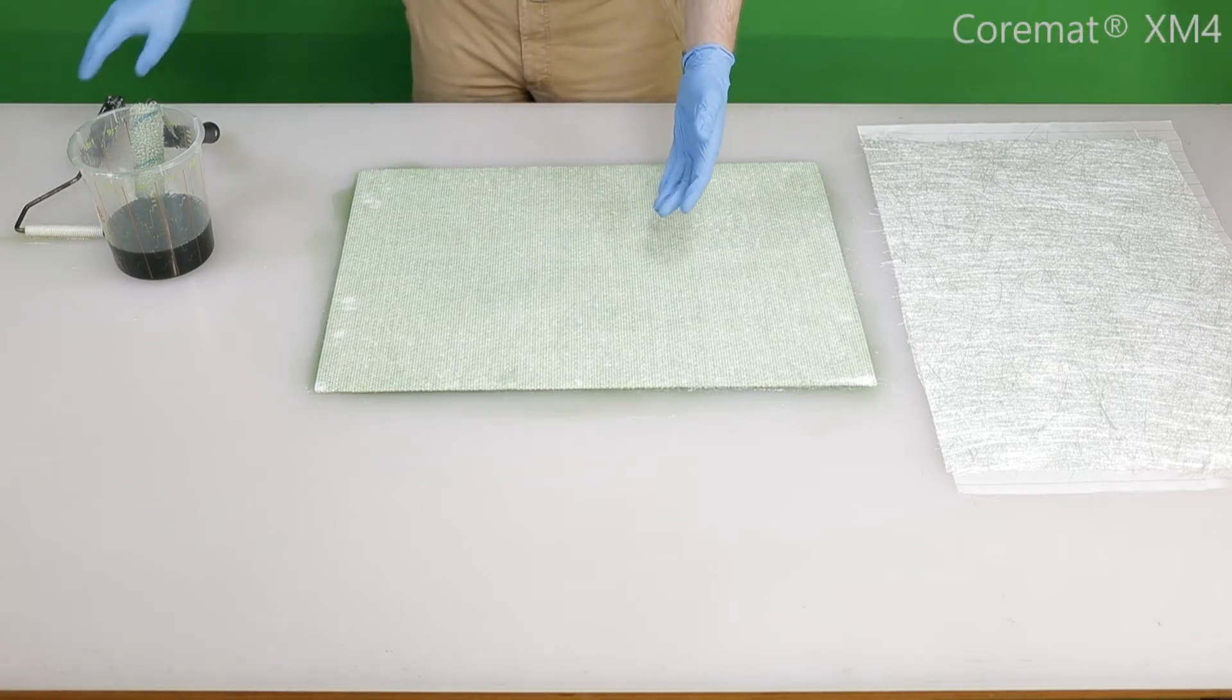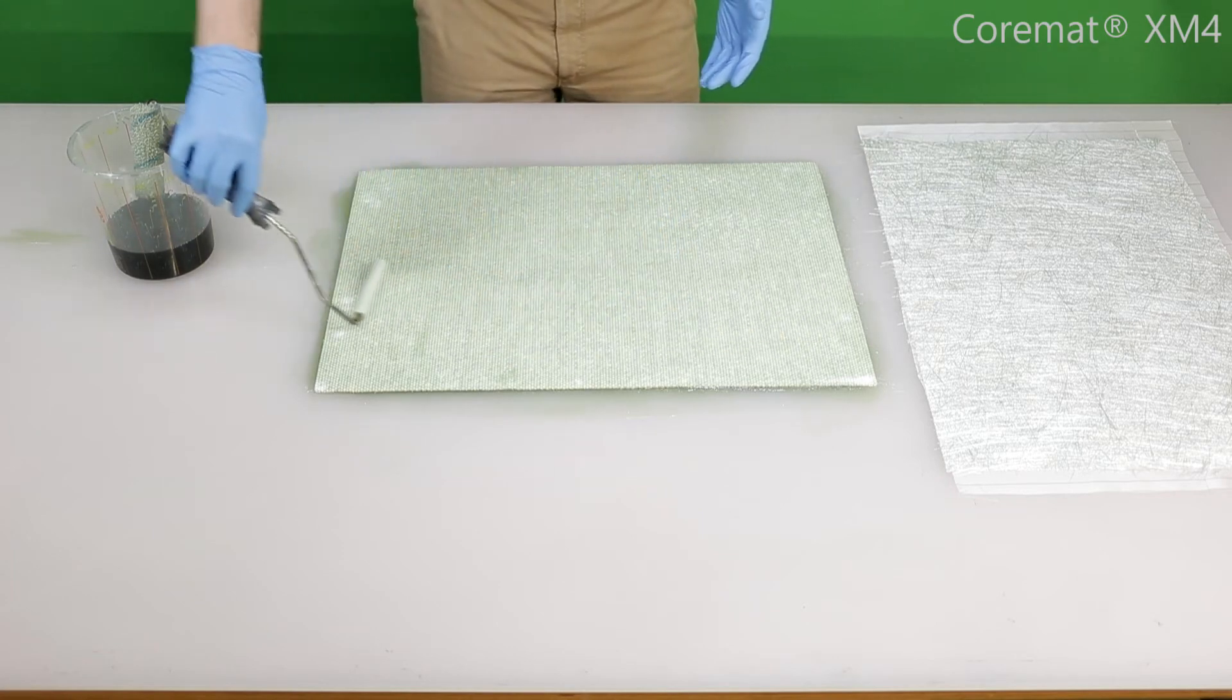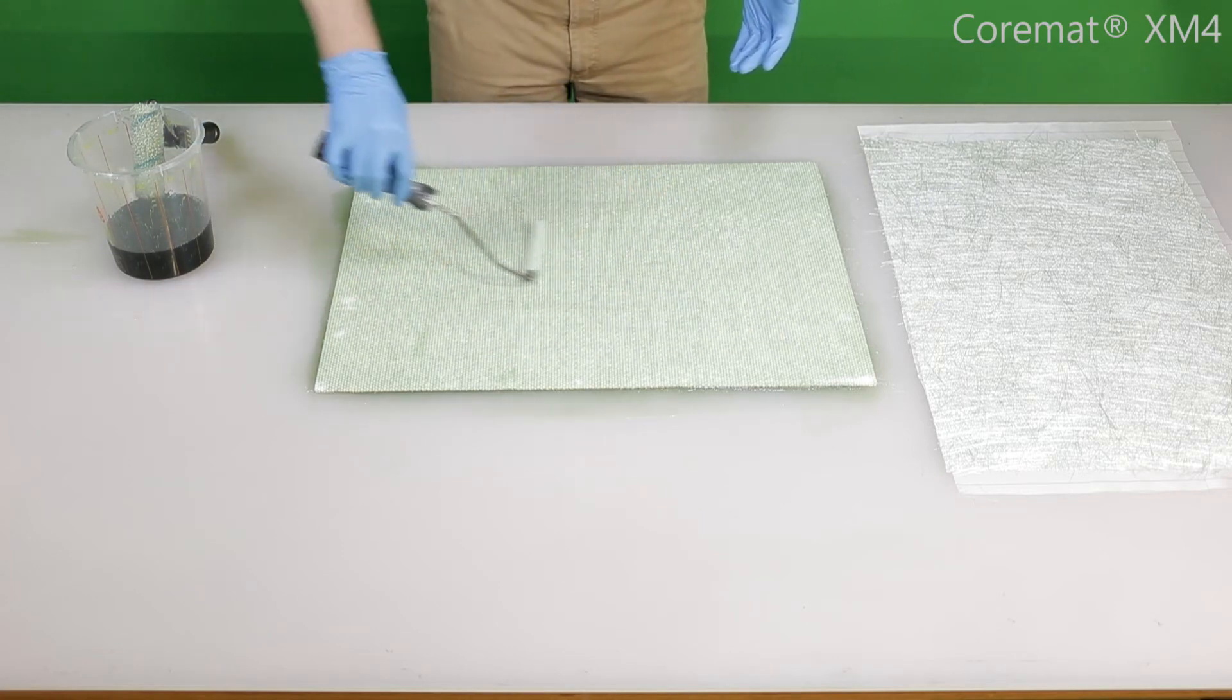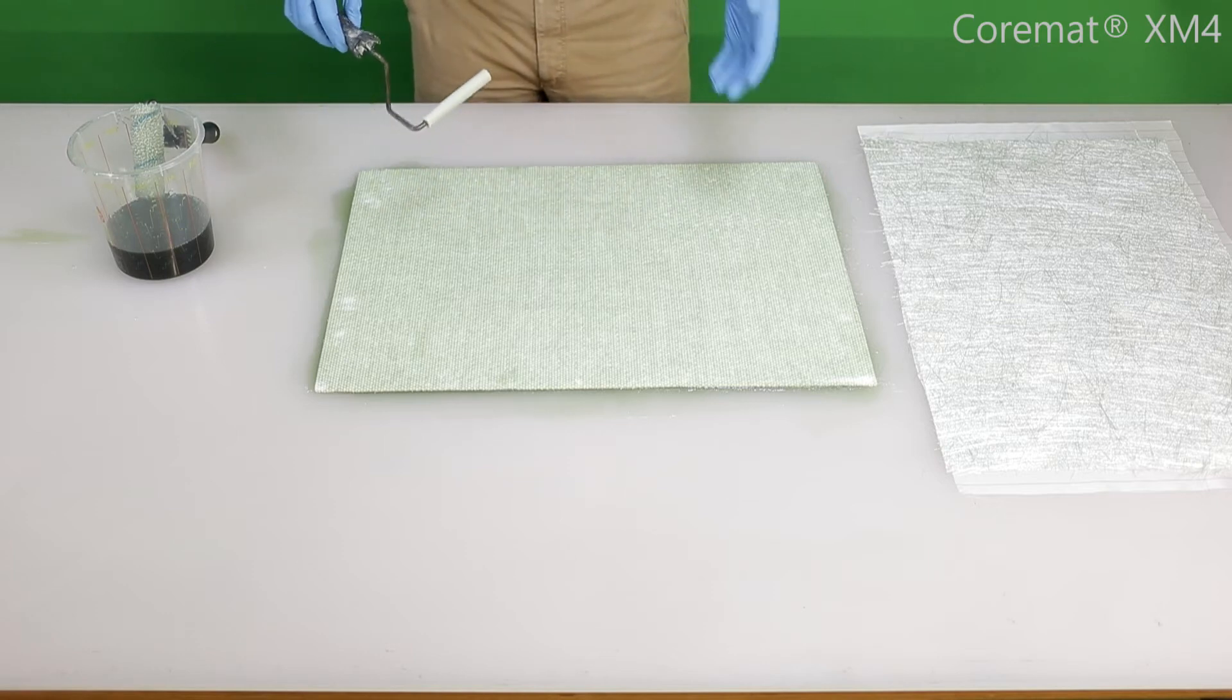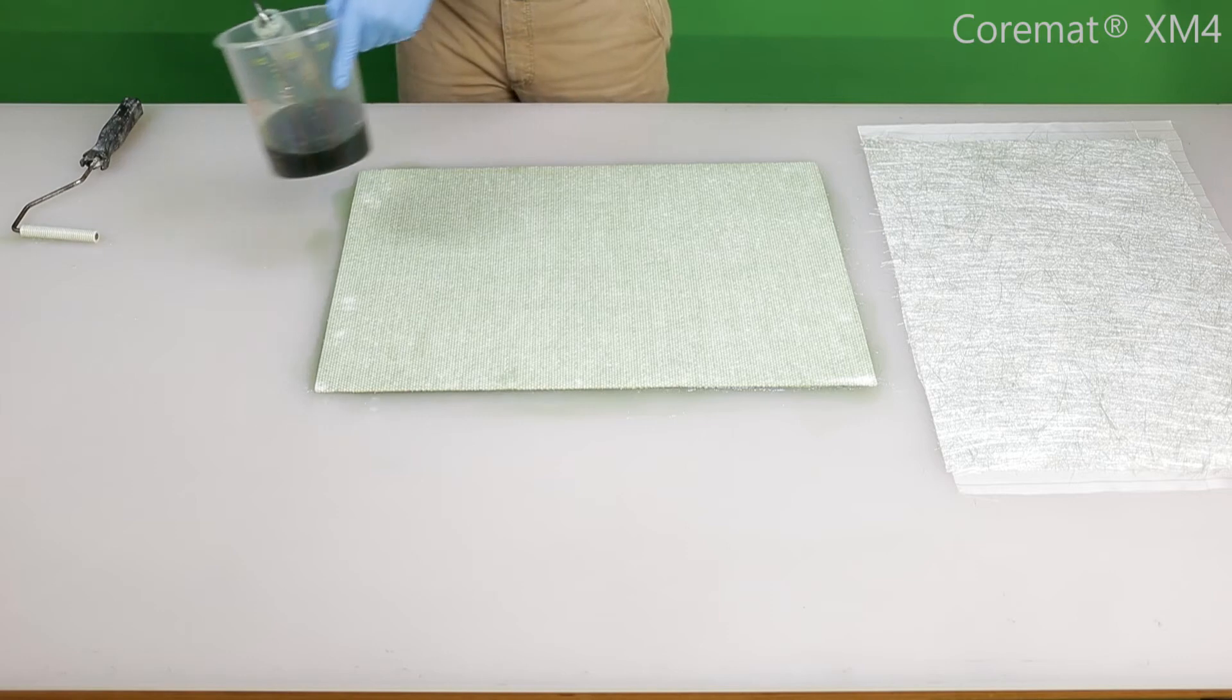On the back side we can see that the core is not fully wetted yet. This is why we use this two-staged approach. Now we can proceed with saturating the core.